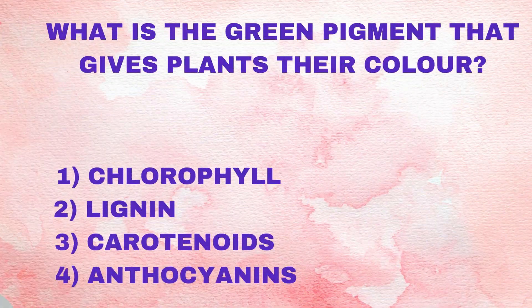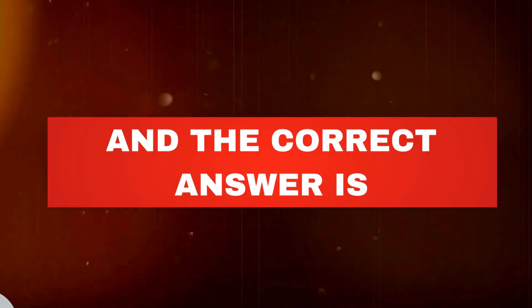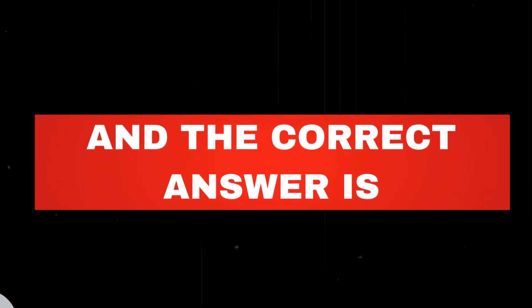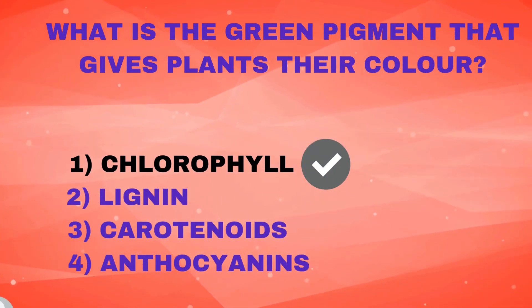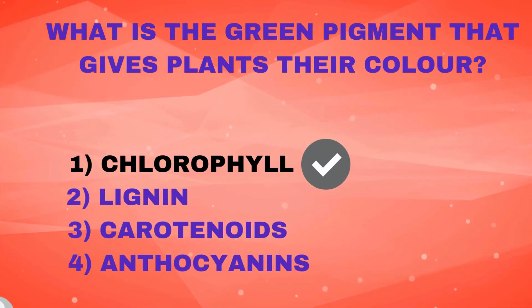What is the green pigment that gives plants their color? Chlorophyll, lignine, carotenoids, and anthocyanins? And the correct answer is chlorophyll. Awesome!